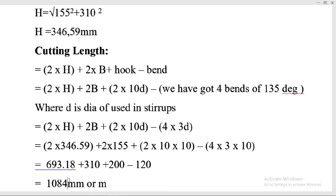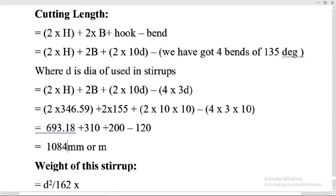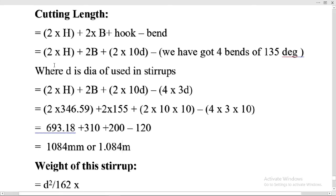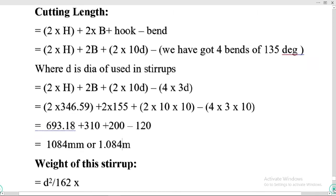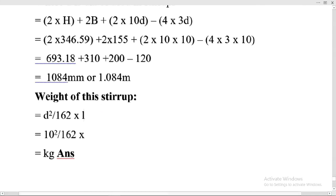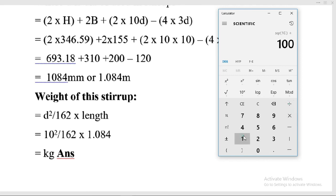So 1084 millimeters is the cutting length of one triangular stirrup. To convert to meters, divide by 1000: 1084 ÷ 1000 = 1.084 meters is the cutting length required for one triangular stirrup. Now let's calculate the weight. We use the standard formula with diameter of 10 millimeters and the length in meters. Remember: in this formula, length is in meters but diameter is in millimeters.